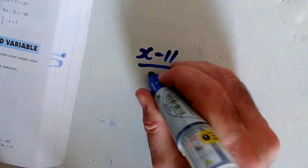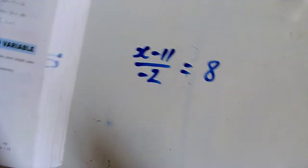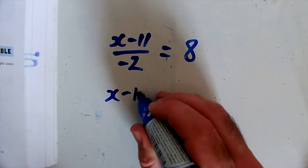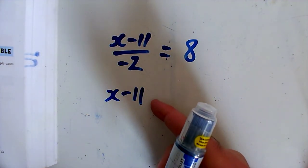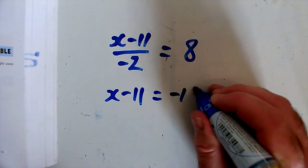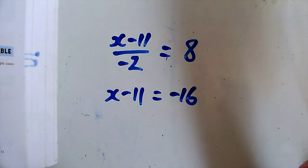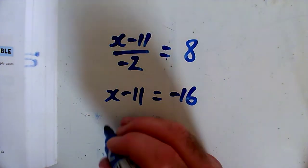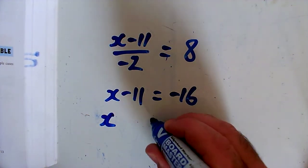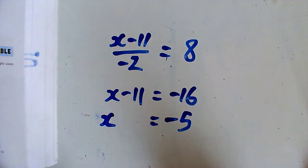Question P: x minus 11 over minus 2 equals 8. I want to get rid of the fraction, so I multiply everything by minus 2. Multiplying both sides by minus 2, x minus 11 equals minus 16, since 8 times minus 2 is minus 16. Adding 11 to both sides, x equals minus 5.